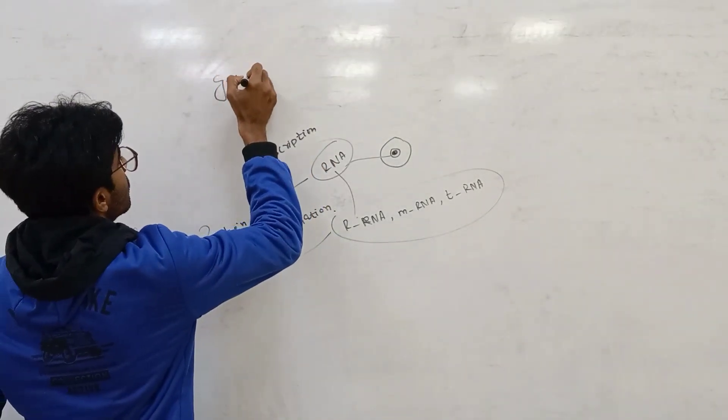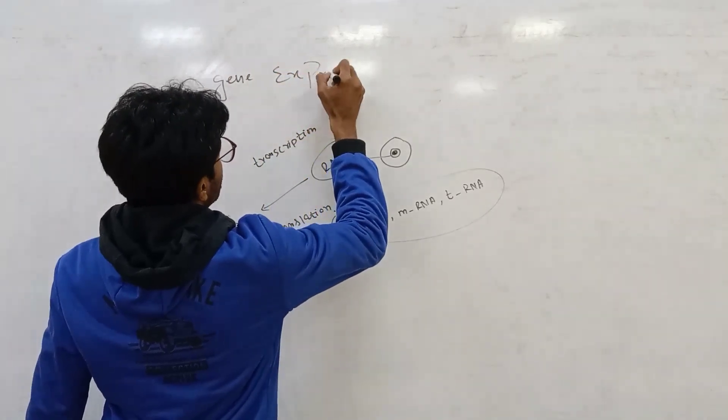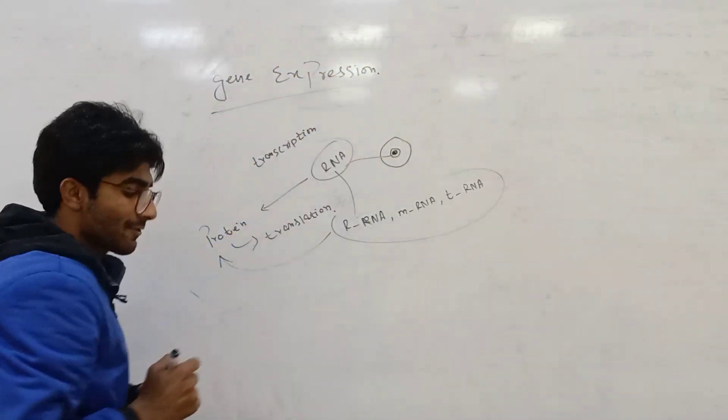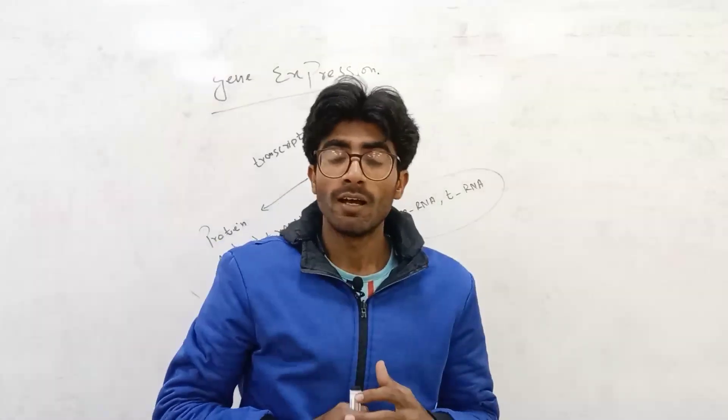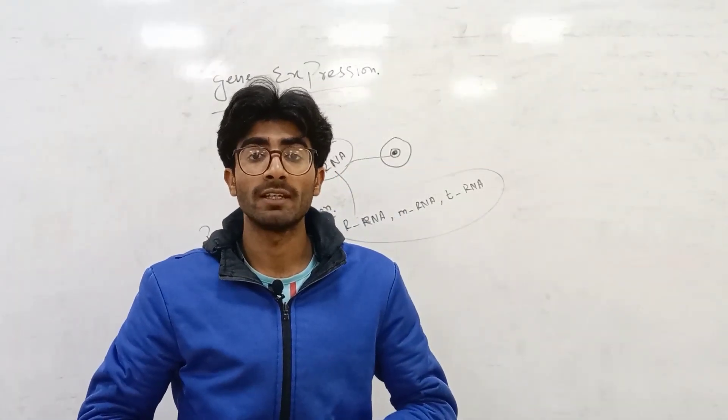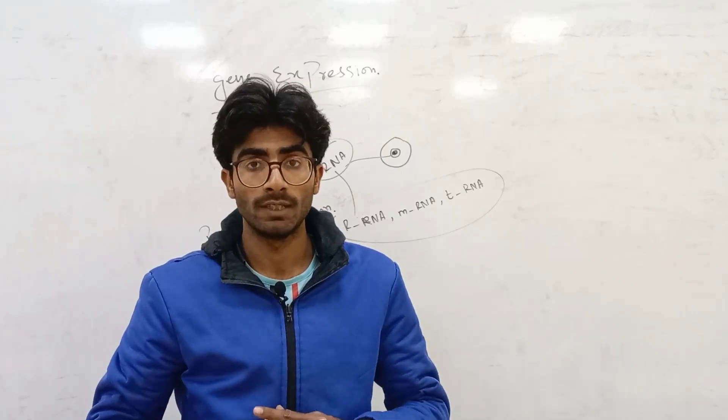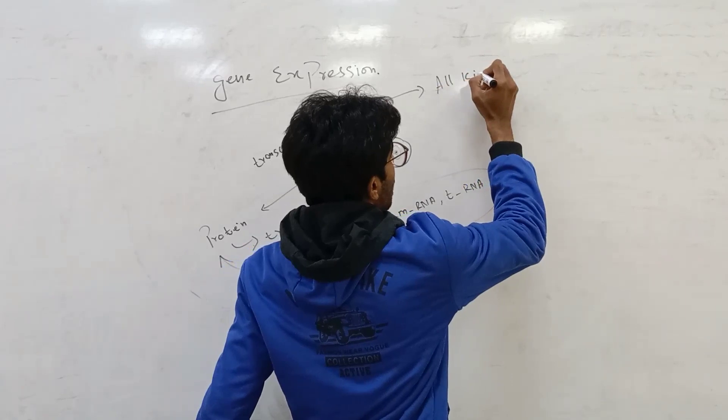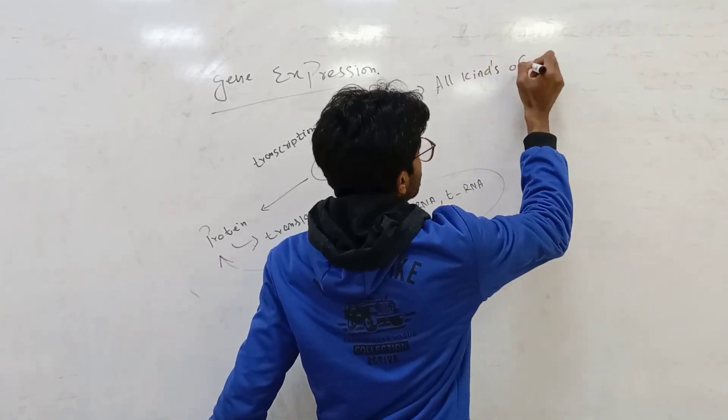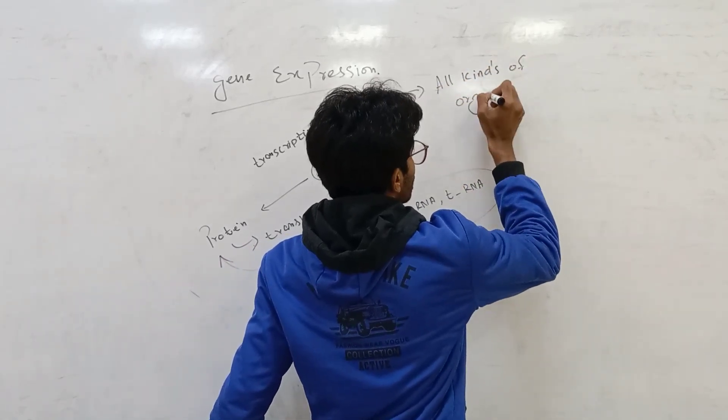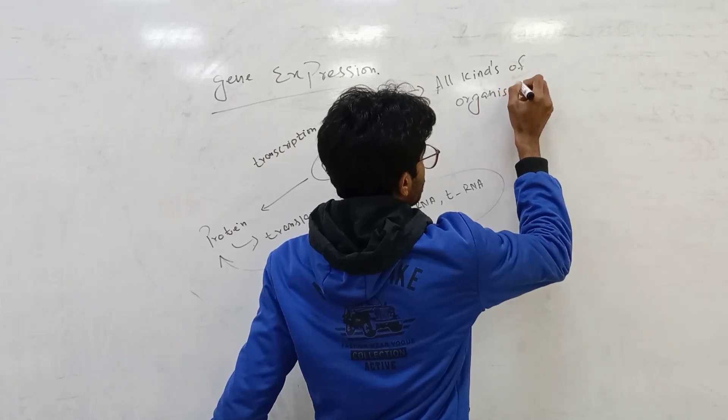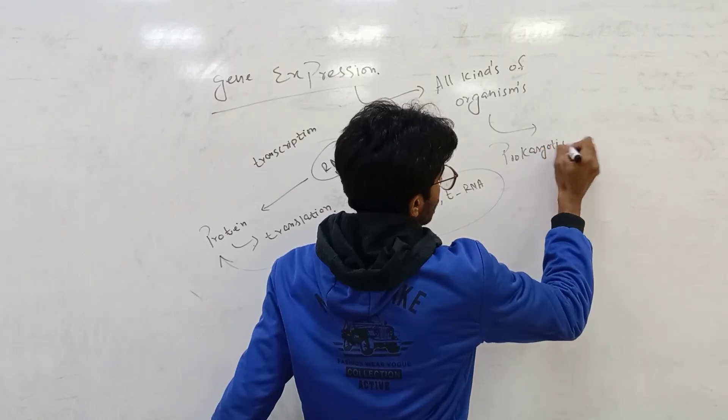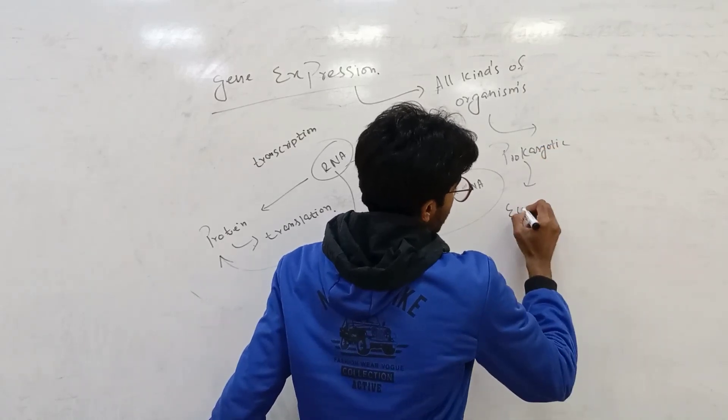What is gene expression? Gene expression occurs in both prokaryotic and eukaryotic in all kinds of organisms.